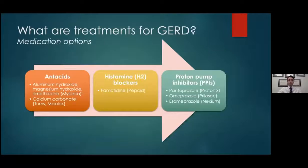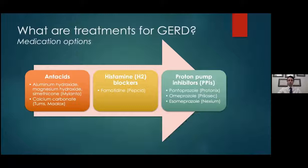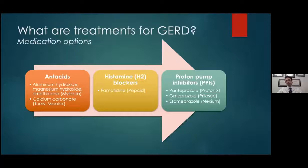The next step is medication options. Starting at the lowest level, we have antacids like Tums, Maalox, or Mylanta — helpful short-term when symptoms are already present. The next step up is H2 blockers — specifically famotidine, or Pepcid. This is a good medication that can be used on an as-needed basis, though many patients take it daily or twice daily to suppress acid.